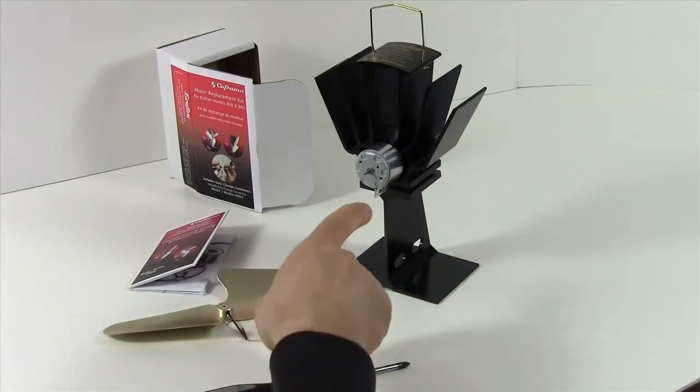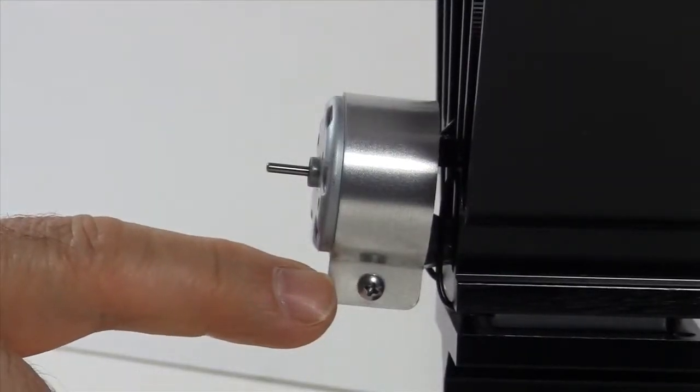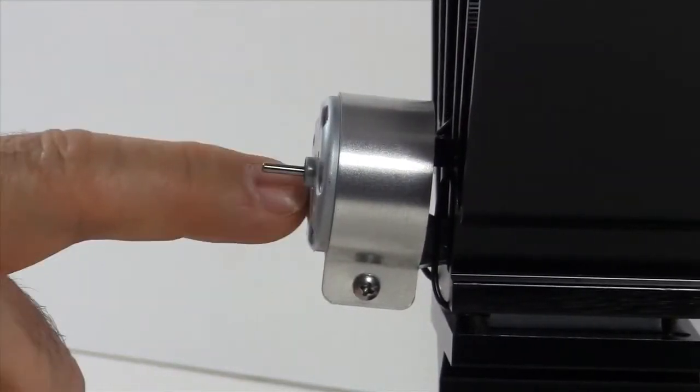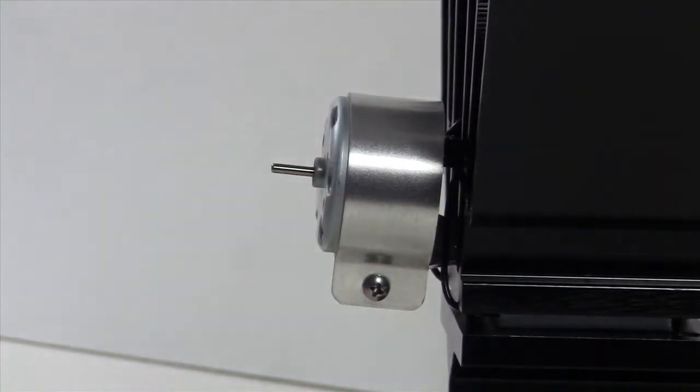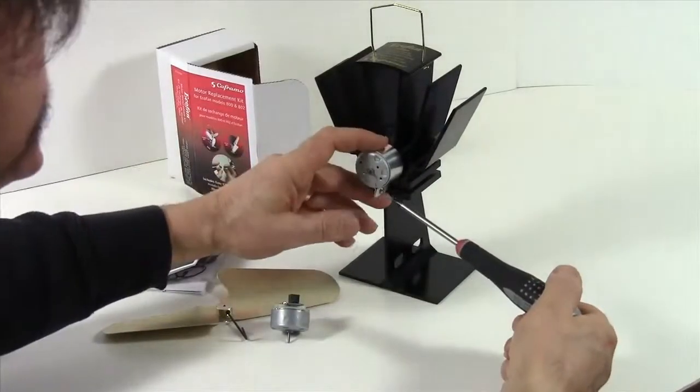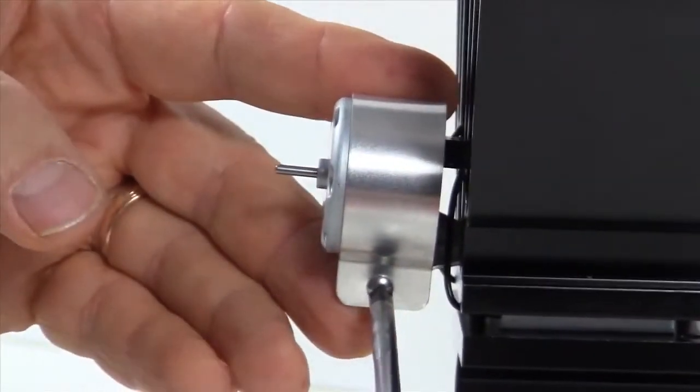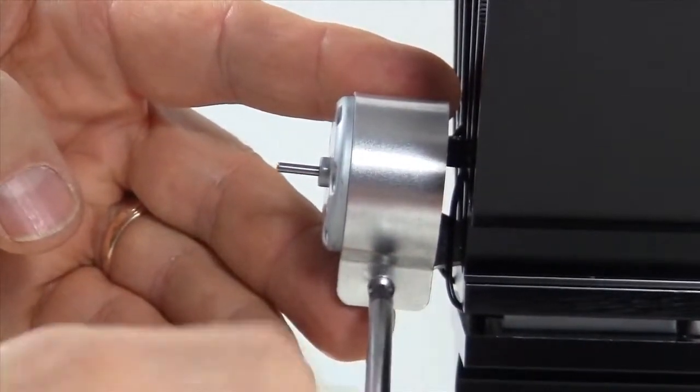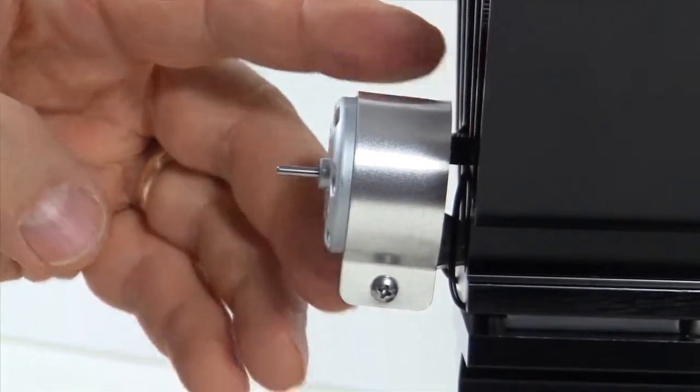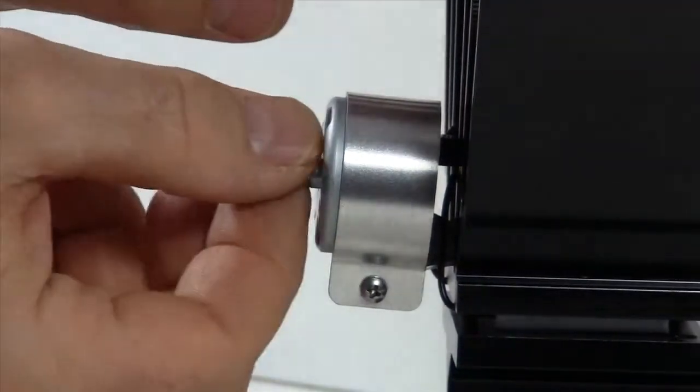Next we have to loosen the screw on the motor bracket which holds the motor in place. We're going to use our Phillips screwdriver and loosen the screw. Now simply slide our motor out.